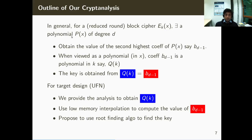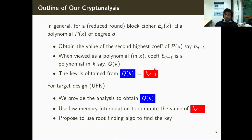Looking at this polynomial when viewed as a univariate polynomial with the key fixed, this is nothing but a polynomial in X. However, if we look at the coefficients and assume the key is unknown, then each coefficient can also be seen as a polynomial in K. That means the second highest coefficient is also a polynomial in the unknown key K. We now have two things: a polynomial representing the second highest coefficient, and via low memory interpolation, the actual value of that coefficient. Naturally, from this equation we can try to find out the key — this is essentially the main idea of our cryptanalysis.